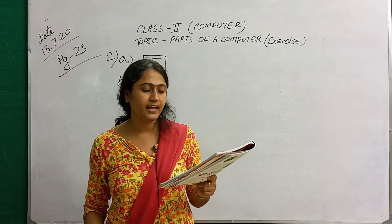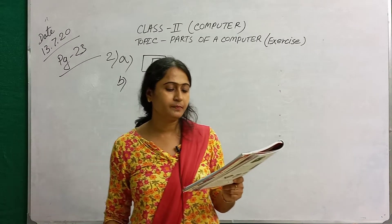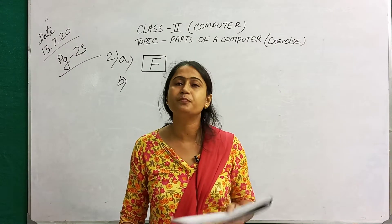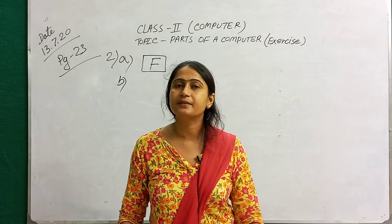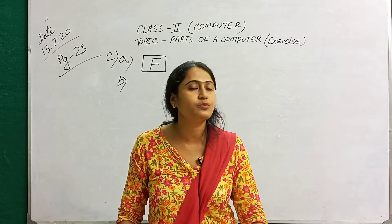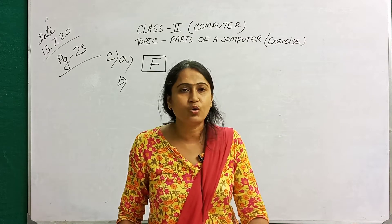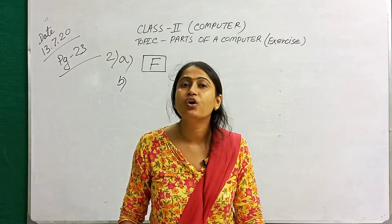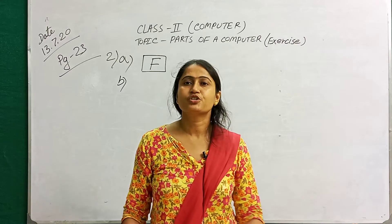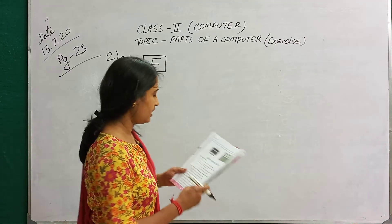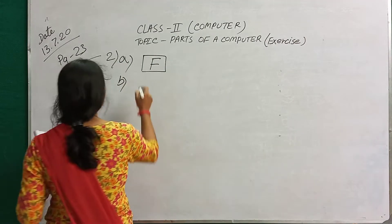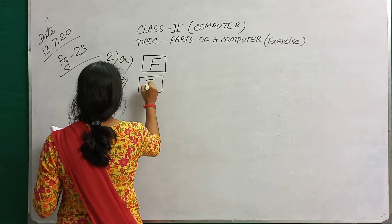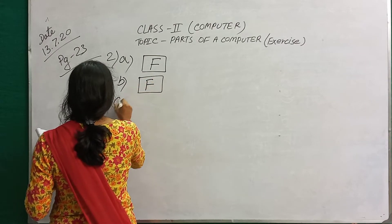Number B: a keyboard has a scrolling wheel and two buttons. Does a keyboard have a scrolling wheel and two buttons? No — a mouse has a scrolling wheel and two buttons. A keyboard has many keys on it. So number B is also false.